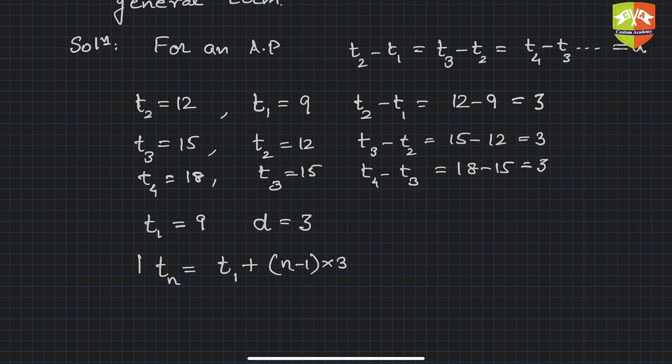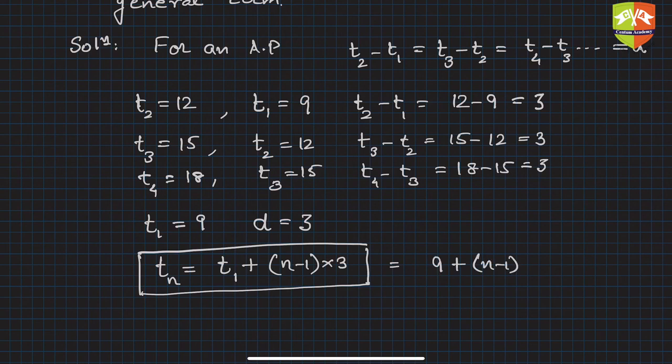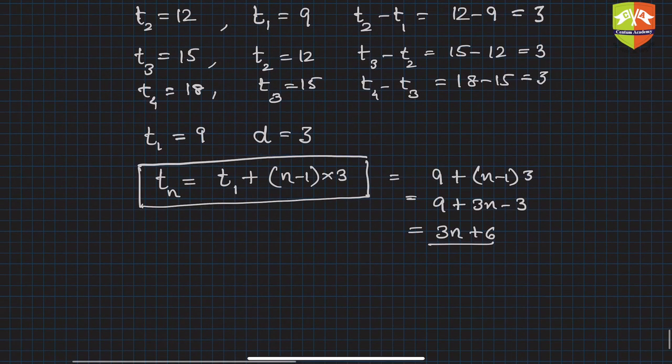Okay, so this is our formula for general term. We can write the values. So for example, t1 is 9 plus n minus 1 times 3. So if you solve this, this is 9 plus 3n minus 3, so hence it becomes 3n plus 6. So this is the general term.